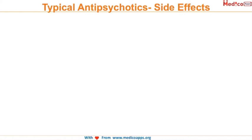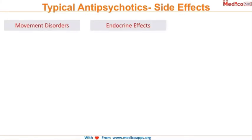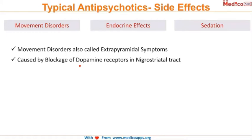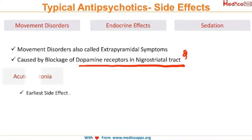High-potency typical antipsychotics can cause movement disorders, endocrine disorders, and sedation. Movement disorders are also called extrapyramidal side effects because they are caused by blockage of dopamine receptors at the nigrostriatal tract. This is a very important MCQ point — remember why these movement disorders are called extrapyramidal symptoms.